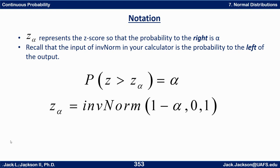The next topic in this video is notation. It's common to use a subscript notation: when you see z sub alpha, this represents a z-score such that the probability to the right is alpha, from a standard normal distribution. Recall that the input to inverse norm in your calculator is the probability to the left of the output. So there's a slight disconnect: the subscript refers to the probability to the right, but inverse norm takes the probability to the left as input.